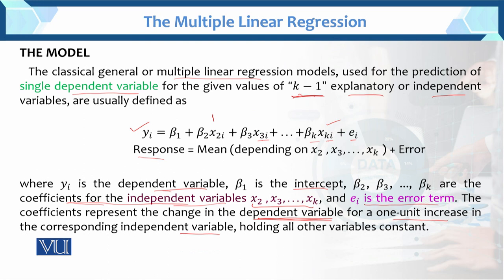If we set all other variables (x2, x3, etc.) to constant, then yi equals β1 — which is the intercept. Think of it like an unemployed person who has no income but still has to eat, wear clothes, and go out — so there is some minimum expenditure. That expenditure is represented by β1, the intercept. Even with no income, some expenditure still exists. So β1 captures the baseline value, and one-unit change in x2 allows us to predict how the model changes.